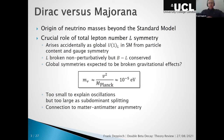In the Standard Model, this global lepton number symmetry arises accidentally — just from the gauge symmetries and particle content, not put in by hand. It might be connected to mass generation. Beyond the Standard Model, lepton number could be broken, and we know B minus L is conserved non-perturbatively, which connects to matter-antimatter asymmetry through mechanisms like leptogenesis.